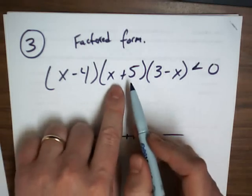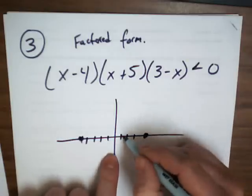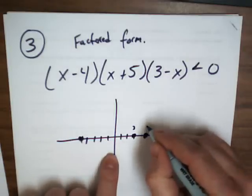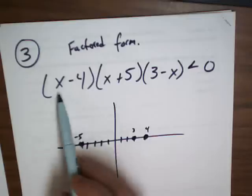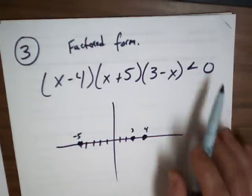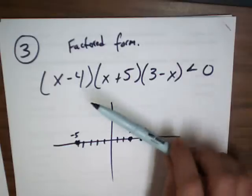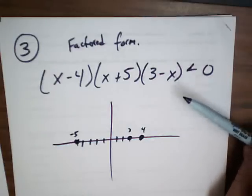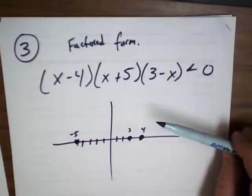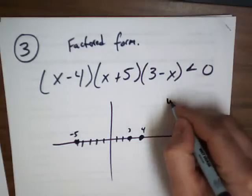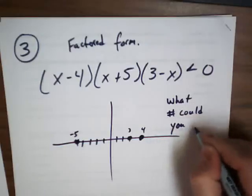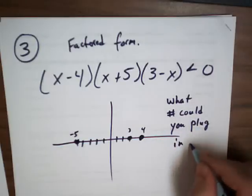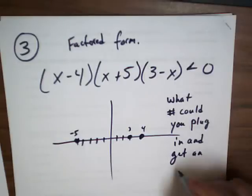So if I put a four in, I get zero. If I put a negative five in, I get zero. If I put a three in, I get zero. So here's three and four and negative five, right? Now, we want to know what values is less than zero, basically. Where is it that this polynomial is less than zero? Not equal to zero, but where is it less than zero? So what that means is, what numbers could you plug in and get an answer less than zero?